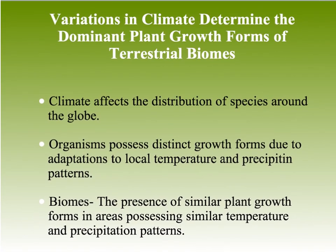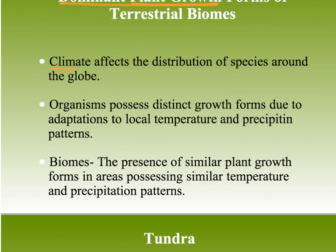Variations in climate determine the dominant plant forms and therefore the terrestrial biomes. When we talk about biomes we're mainly talking about plant growth forms, because plant growth is the base of the food chain and determines what types of life forms can be there. Climate is a very important factor in determining the distribution of species, because organisms have adapted to particular biomes and grow according to local temperature and precipitation patterns.